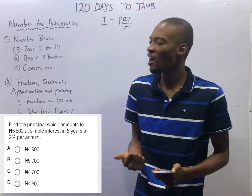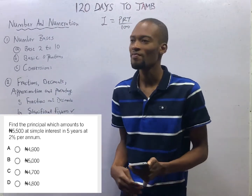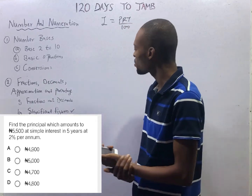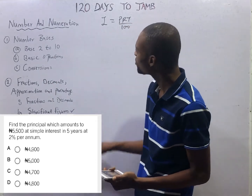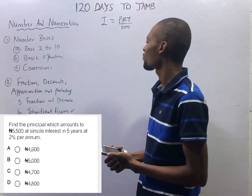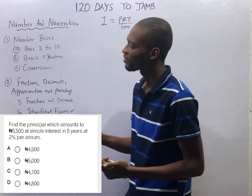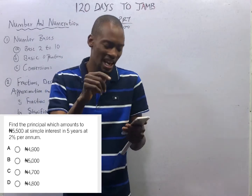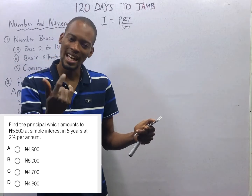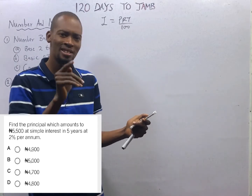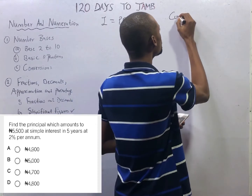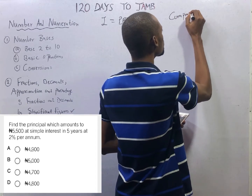Most times your answer will be in the options. Sometimes your answer will not be in the options. That will leave you confused. You will feel you are not adding or multiplying properly. Ladies and gentlemen, whenever you see the word 'amount' in a question that looks like a simple interest question, think twice — that is involving compound interest.